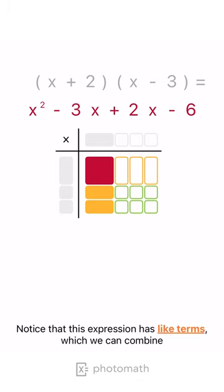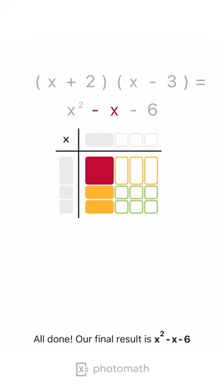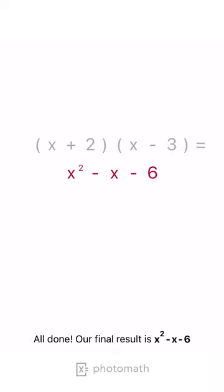Notice that this expression has like terms, which we can combine. All done! Our final result is X squared minus X minus 6.